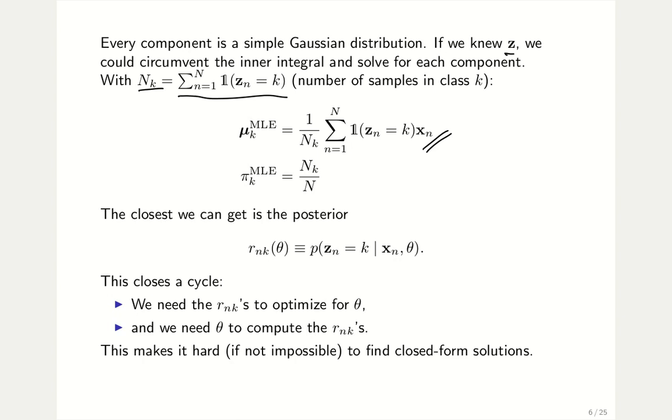You can also look at the mixture components pi k, and it's fairly easy to understand that the maximum likelihood estimation for them is just the number of samples in class k over the total number of samples. That is the fraction of samples in the entire data set that belong to class k. But of course this number nk of samples in class k is not given to us, which is a direct consequence of the missing labels.